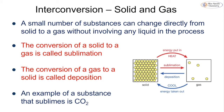A very small number of substances can change directly from a solid to a gas without involving any liquid — they completely bypass the liquid stage. This conversion is known as sublimation. A common example is carbon, which sublimates from a solid into a gas at very high temperature. Going the other way — from gas straight back into a solid — is known as deposition. Carbon dioxide, or dry ice, is a familiar example of sublimation.